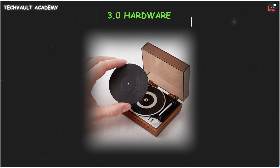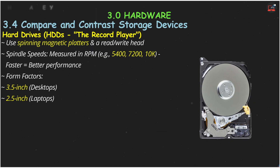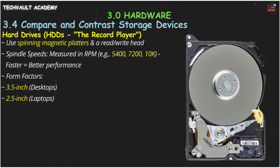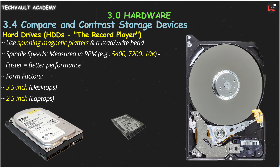Think of these as a tiny record player. They have spinning magnetic platters, or disks, and a read-write head on an actuator arm that moves to access data. Their performance is measured by spindle speed and RPM. Common speeds are 5,400, 7,200, or 10,000 revolutions per minute. Faster spinning means faster data access. They come in two main form factors: the larger 3.5-inch size for desktops, and the smaller 2.5-inch size for laptops.